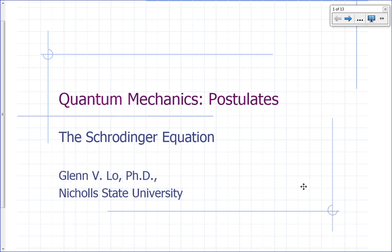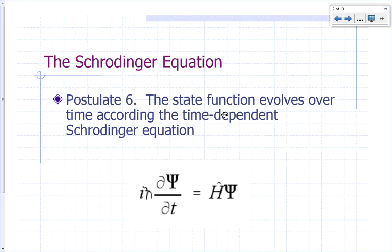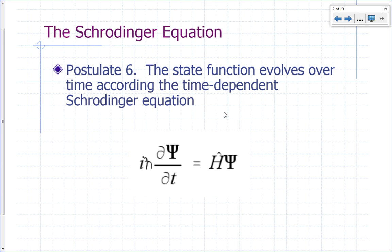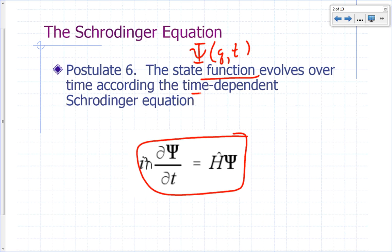The next postulate is the Schrödinger equation, and this is the equation we'll keep coming back to as we continue with this course. In our numbering system, this is the sixth postulate. The state function psi evolves over time — remember, psi is a function of coordinates and time. This postulate says the state function changes with time according to the time-dependent Schrödinger equation.